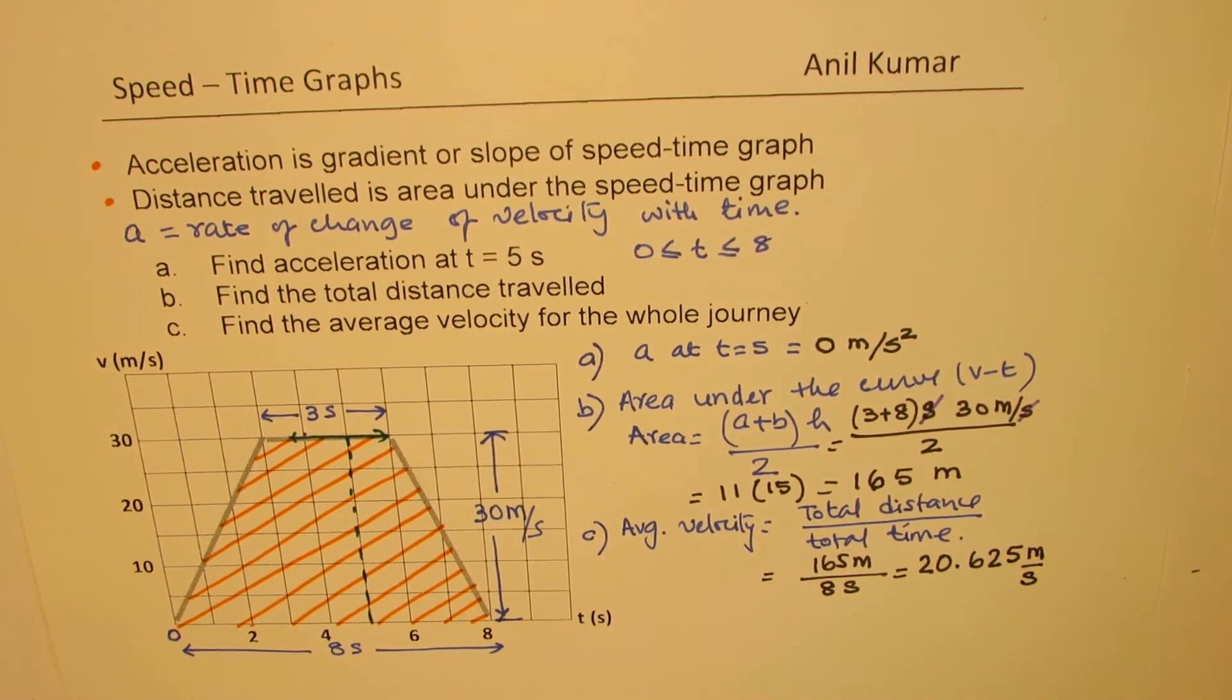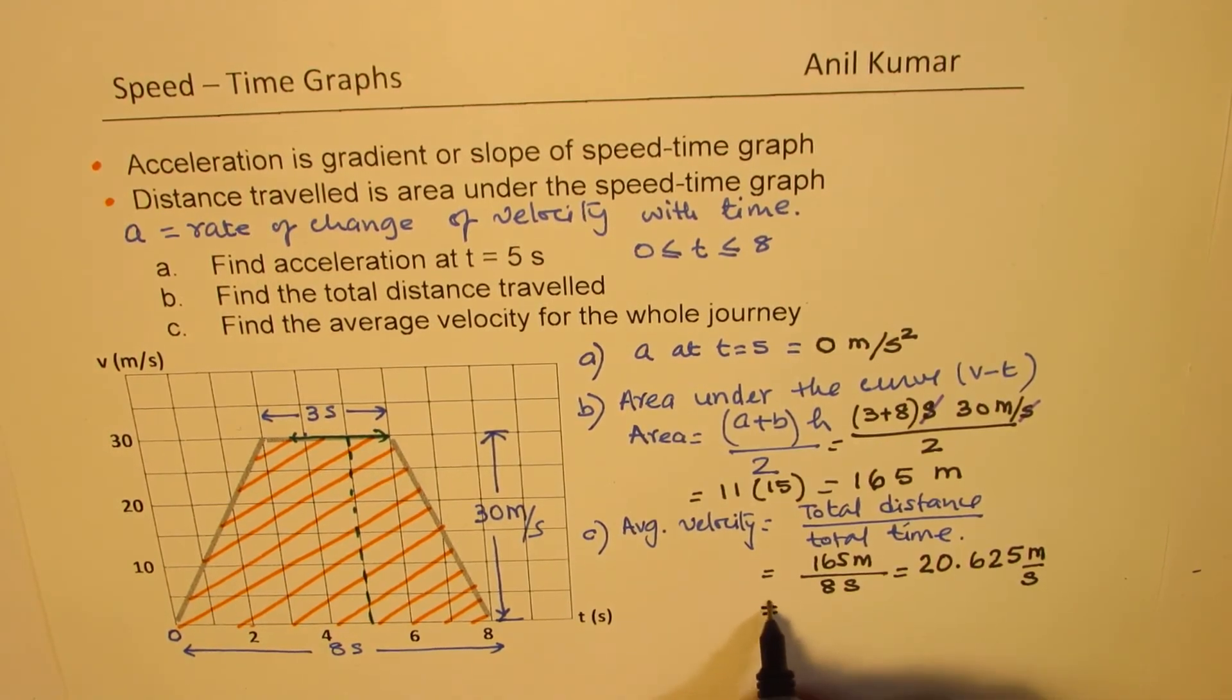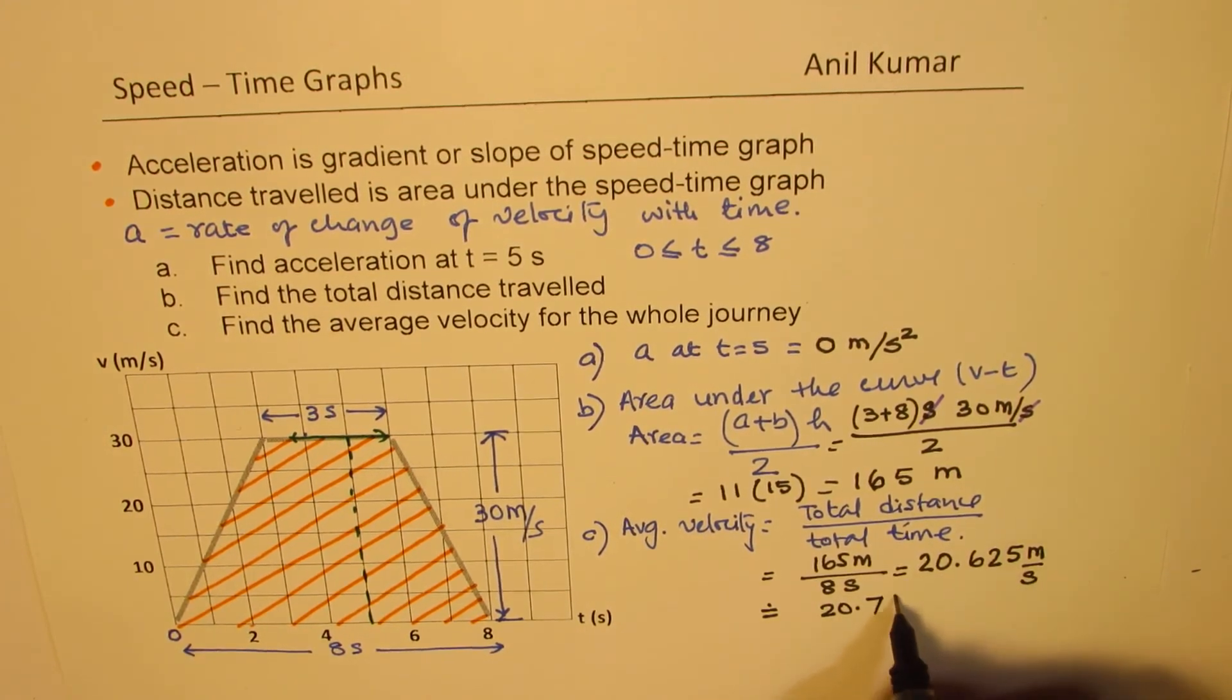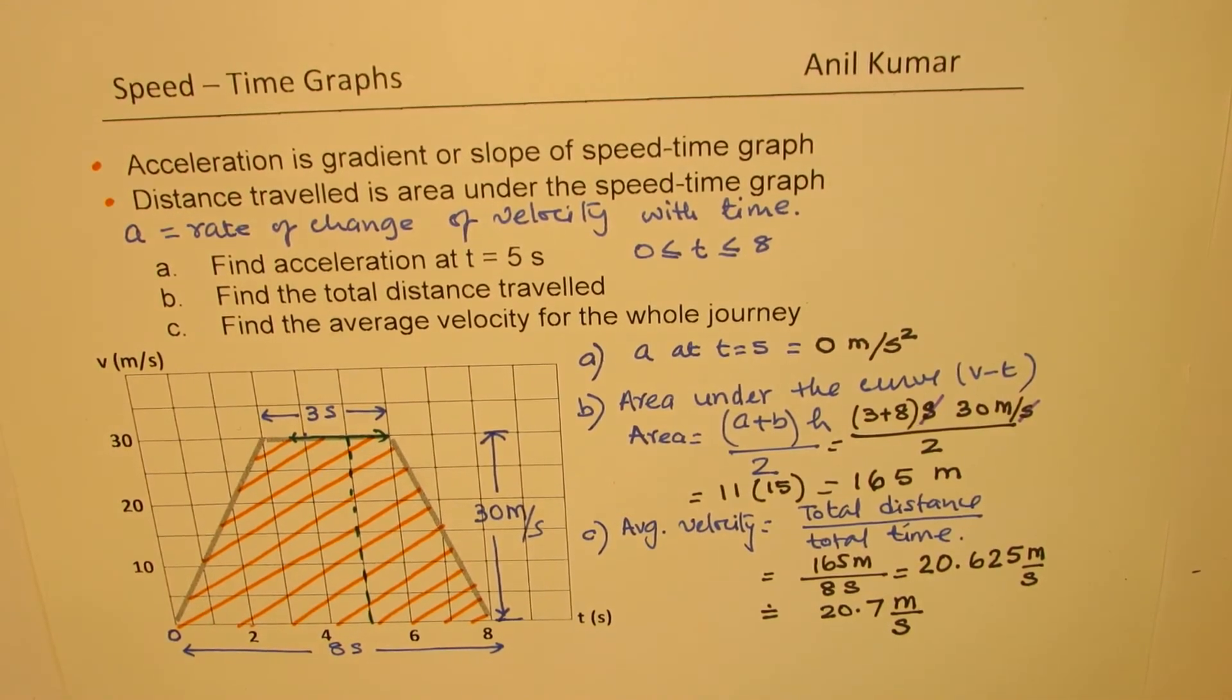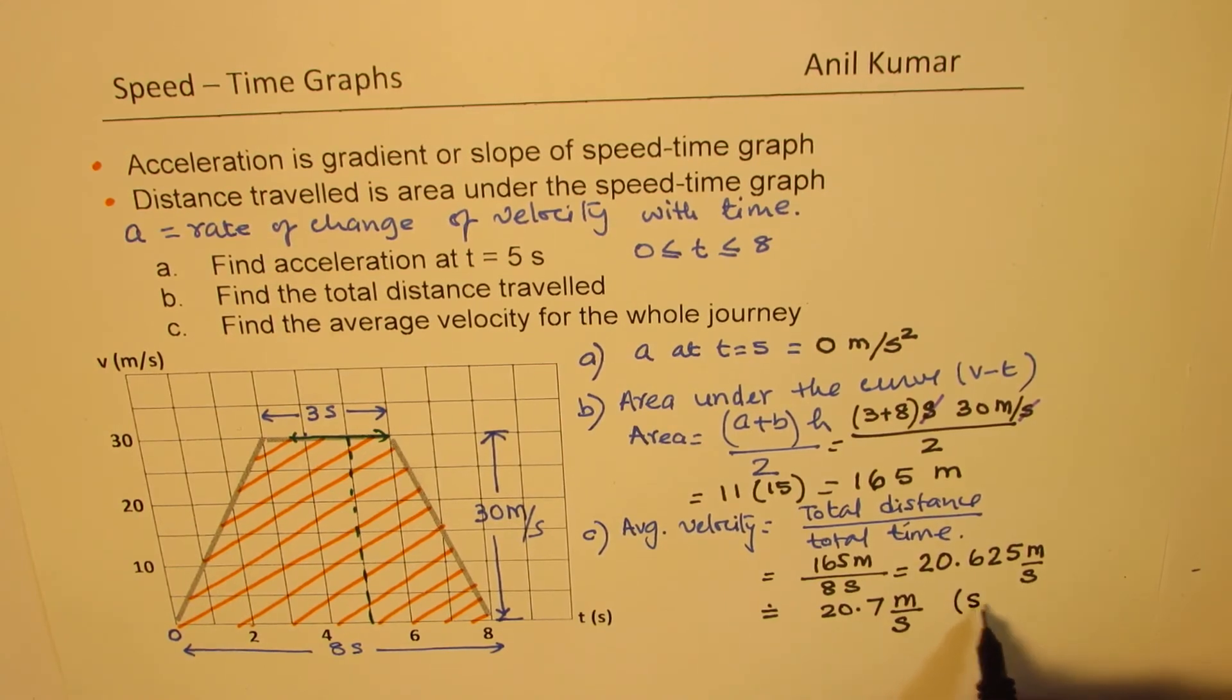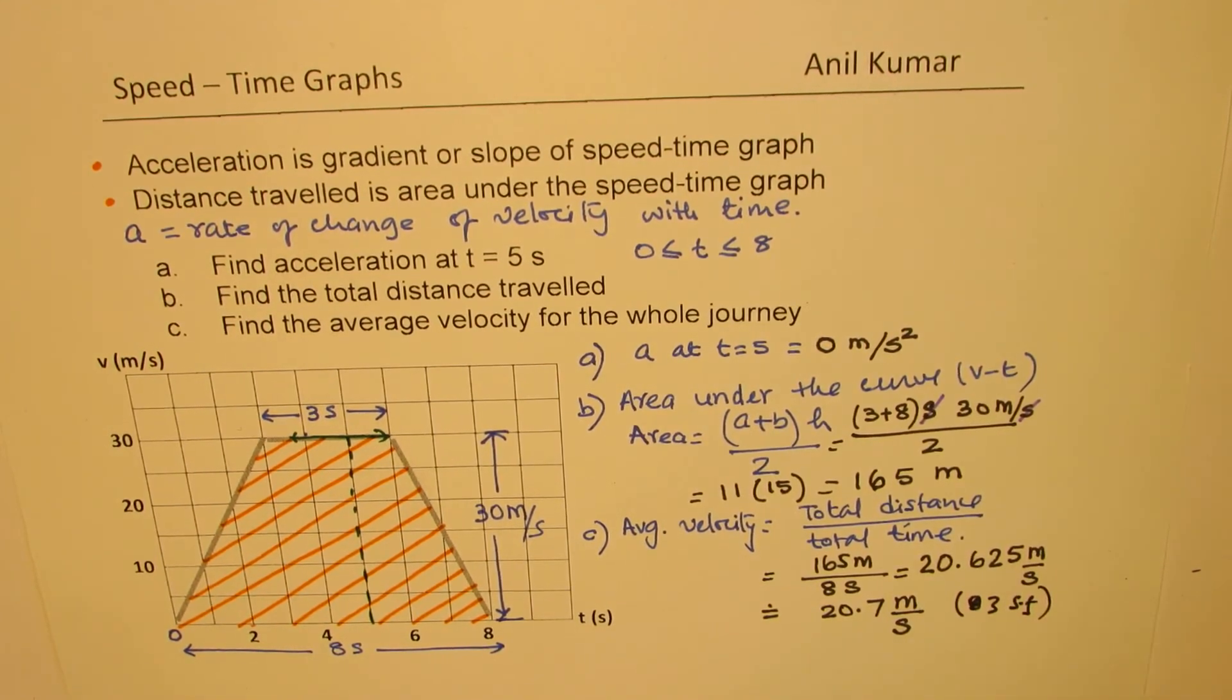We could always round this to one decimal place. We could write this as 20.7 meters per second. So that is how we could provide the answer. Sometimes we also say this answer is to three significant figures. So 20.7 meters per second.